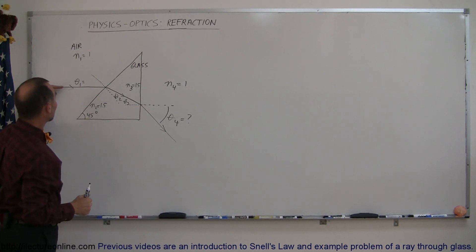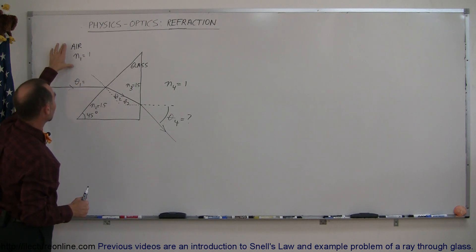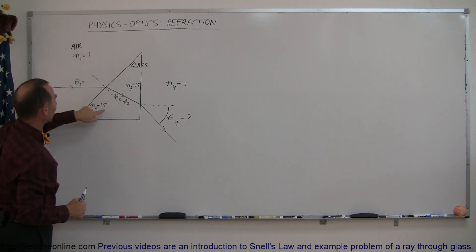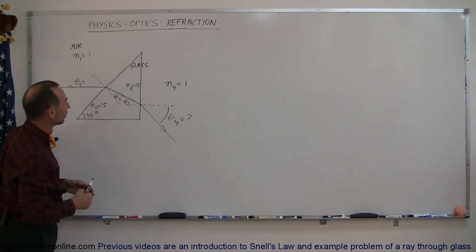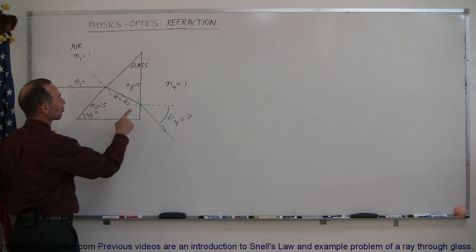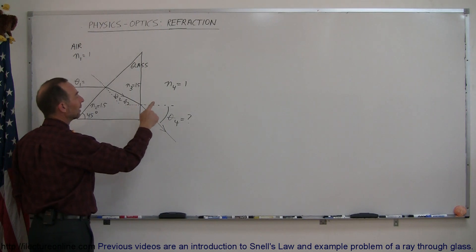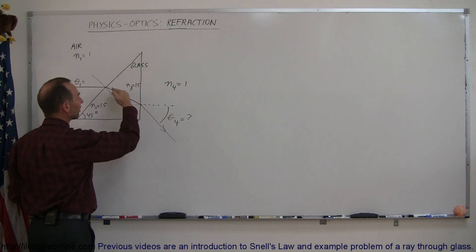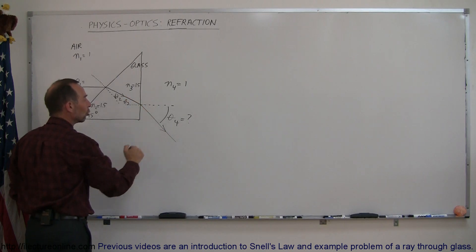Notice that at the first boundary we're traveling from an index of refraction which is low to one which is high, which means the beam bends or refracts towards the normal. At the second boundary we're traveling from an index of refraction which is high to one which is low, which means the beam will refract or bend away from the normal.